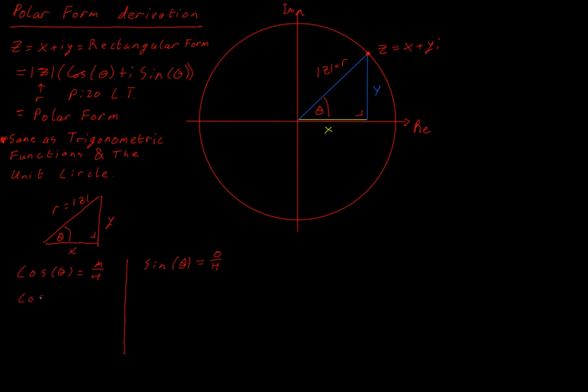Cos theta is going to equal adjacent over hypotenuse. So X all over modulus of Z. Multiplying both sides by the modulus of Z, we would end up with X is equal to modulus of Z times cos of theta.